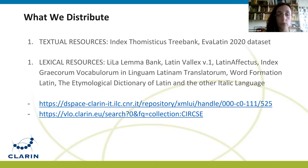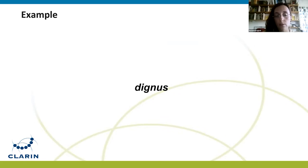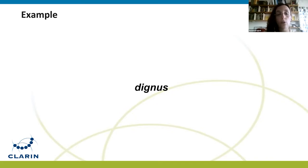All the resources are made available through the ILC for CLARIN data center in a dedicated repository and the CLARIN Virtual Language Observatory. By combining these resources, it is possible for CLARIN users to gather various types of information concerning Latin lemmas and also see their context of use in the corpora.